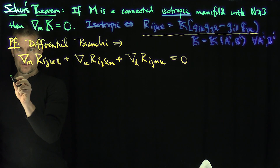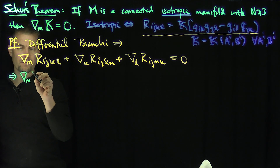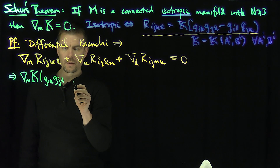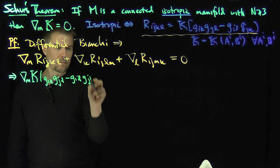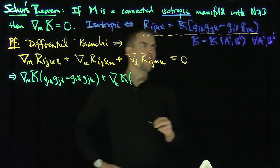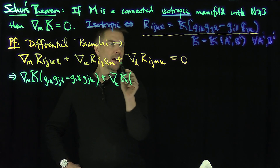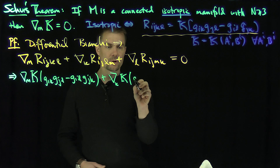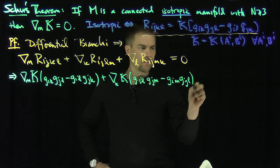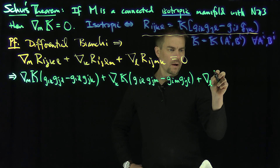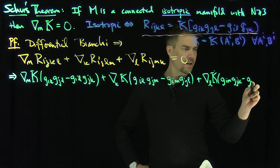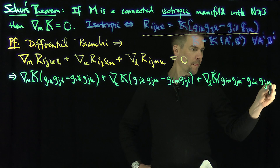So plugging this in, this implies that the m-covariant derivative of k times (g_ik g_jl minus g_il g_jk), plus the k-covariant derivative of the sectional curvature times (g_il g_jm minus g_im g_jl), plus the l-covariant derivative of the sectional curvature times (g_im g_jk minus g_ik g_jm) is equal to zero.